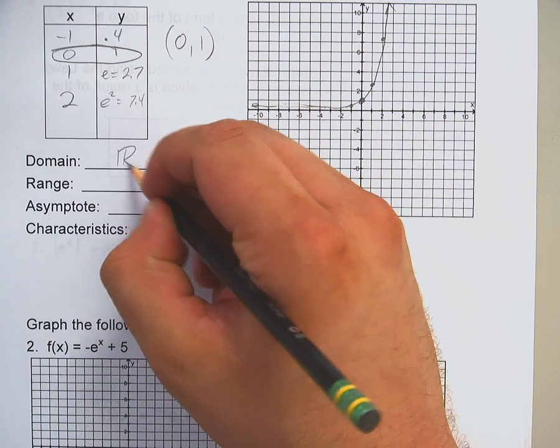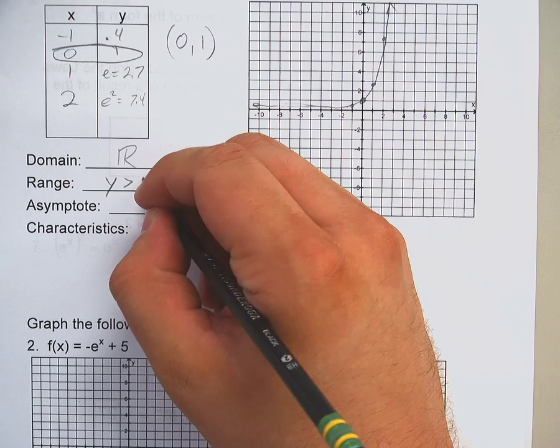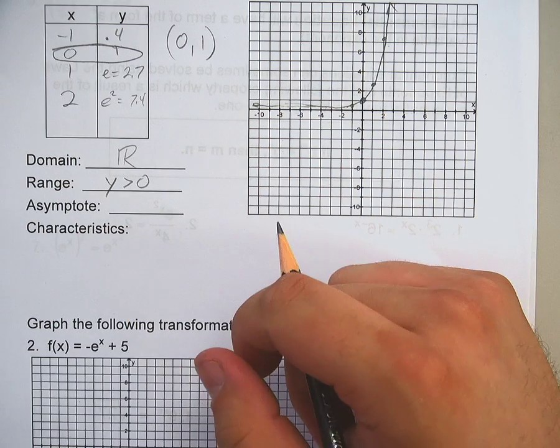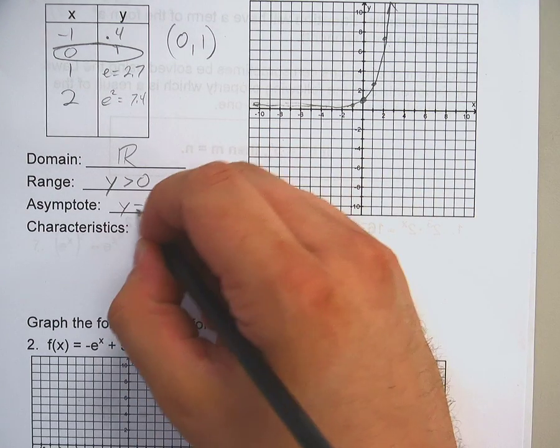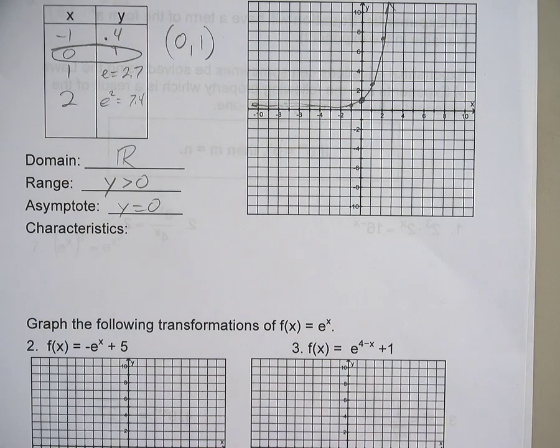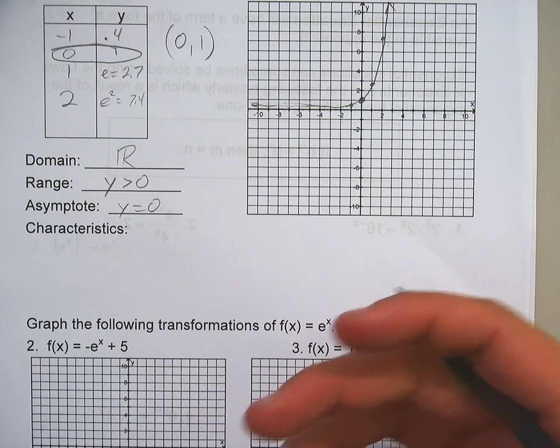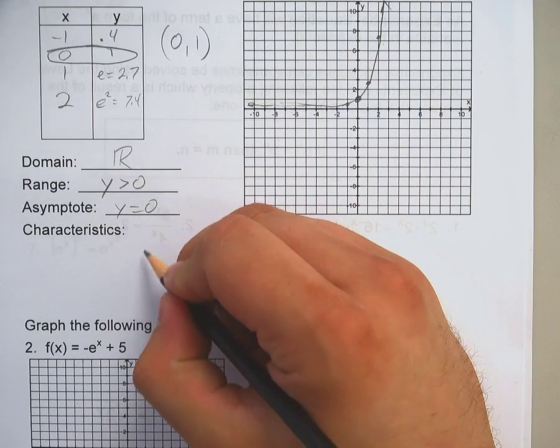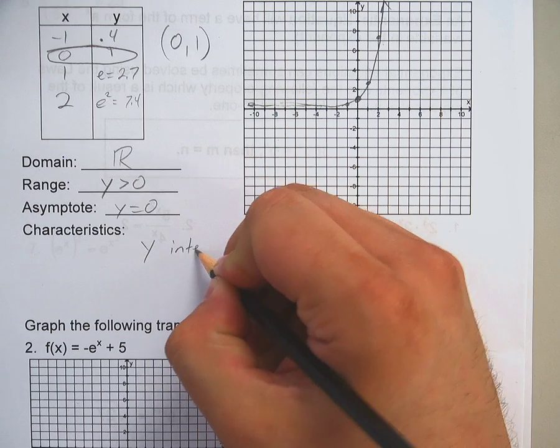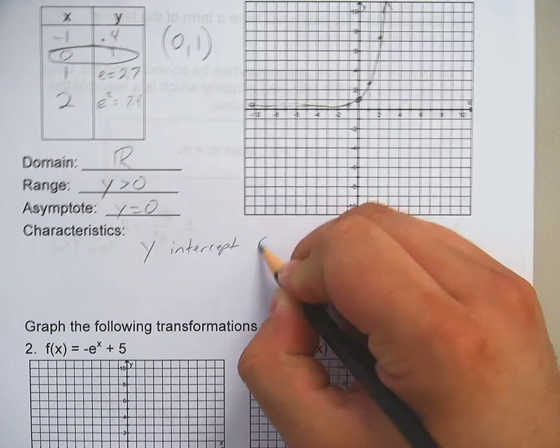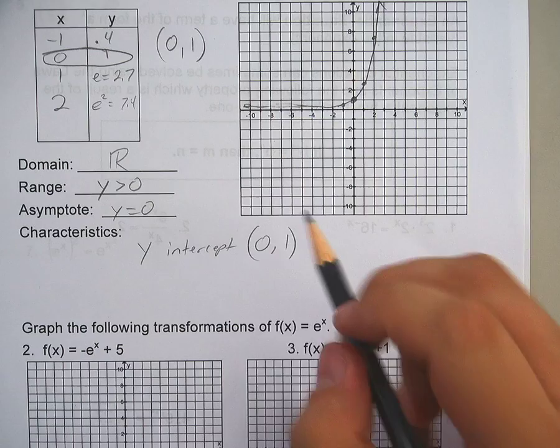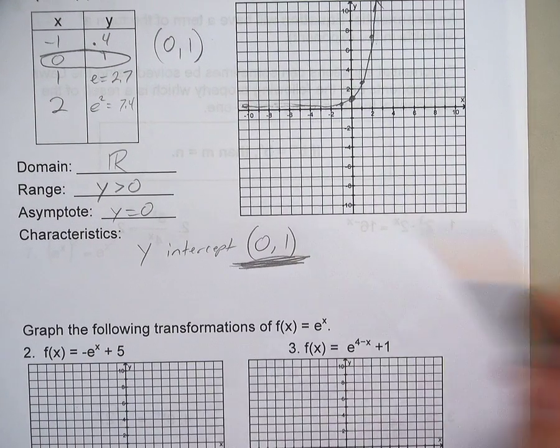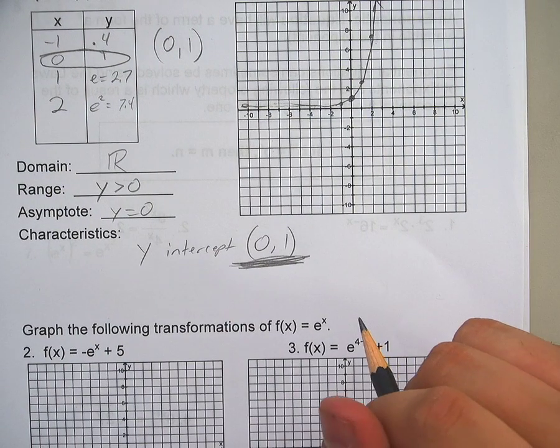Domain is all real numbers. Range, y is greater than 0. It will never be negative. You have an asymptote at y equals 0. It's increasing. You have the big characteristic here is a y-intercept at (0,1). So, this is the important guy. That's the important one.